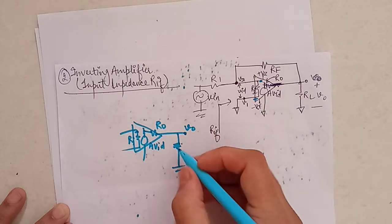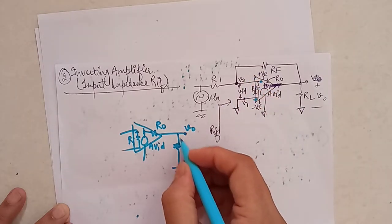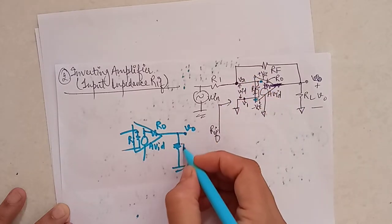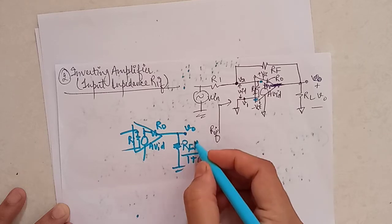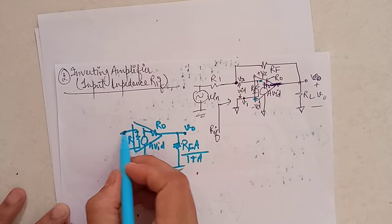So on the output side I will get one resistance after splitting this RF using Miller's theorem. So when you split this into two parts, the output part will become RF times a over 1 plus a. So we multiply with the term a over 1 plus a.